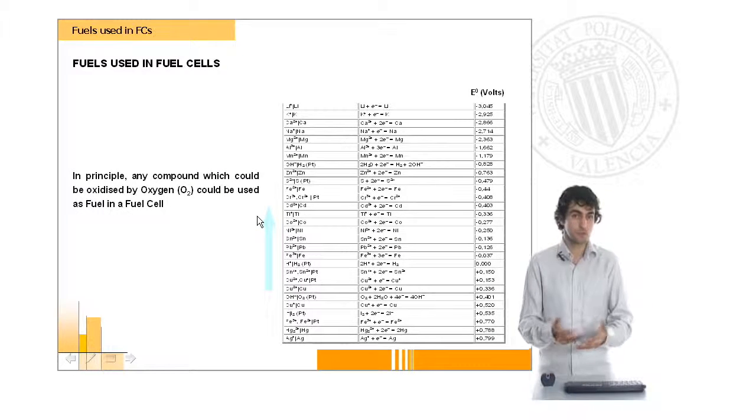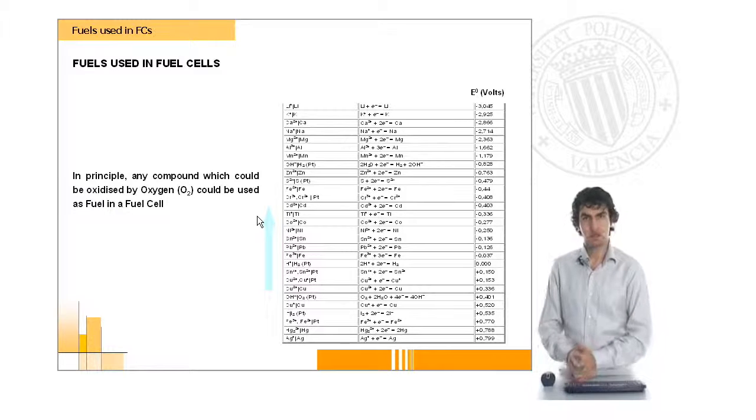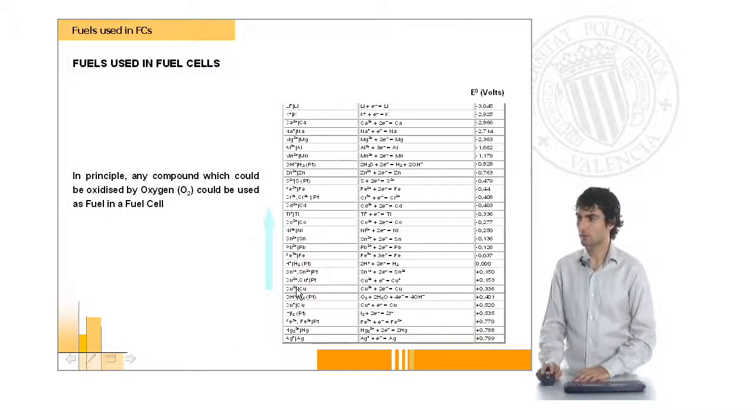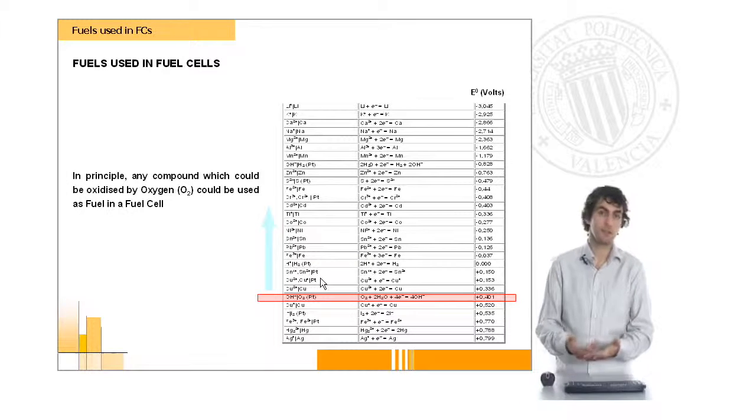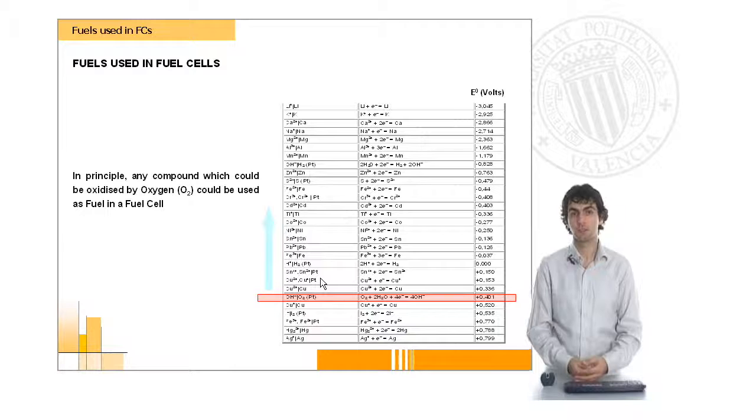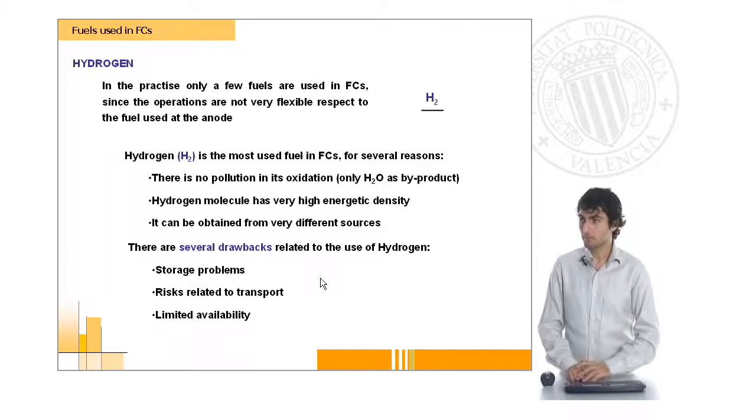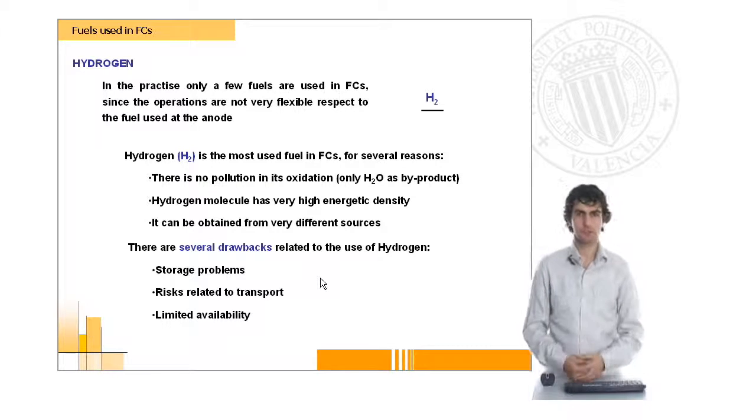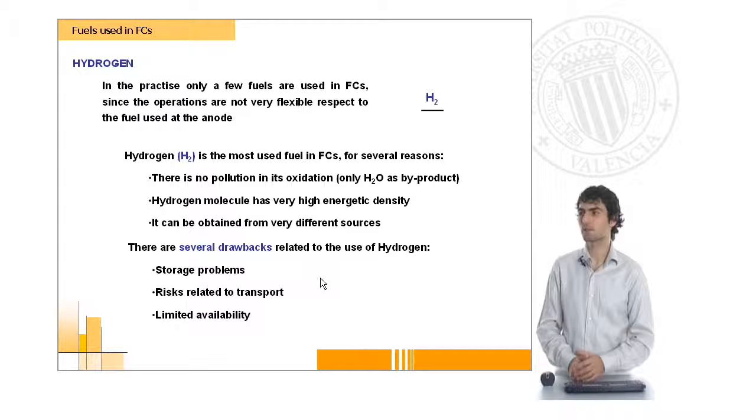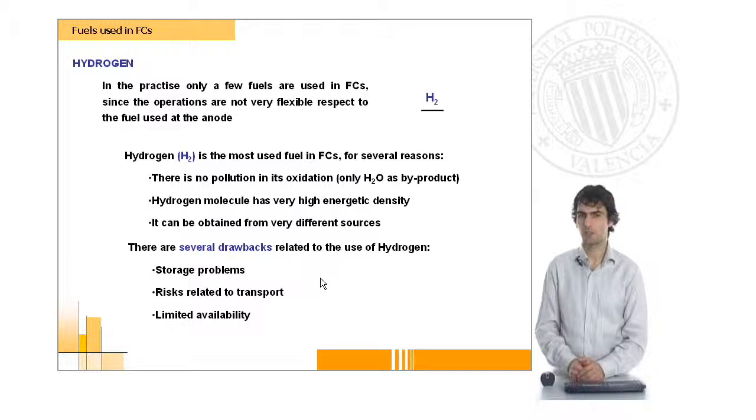But we could use, in principle, any component which could be oxidized by oxygen—anything in this part of the periodic table—to perform an electrochemical reaction and build a fuel cell. However, in practice, there are only a few components which are going to be used as fuels in fuel cells. The king of the fuels, the most important, is hydrogen.